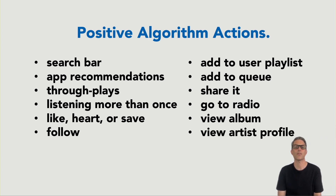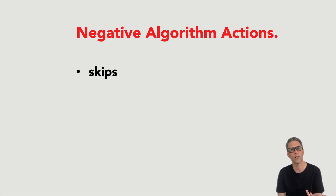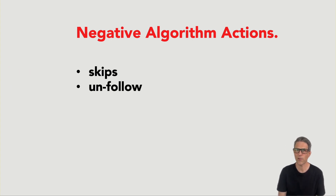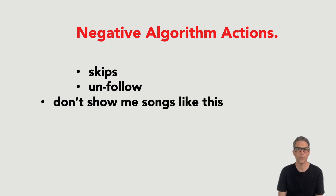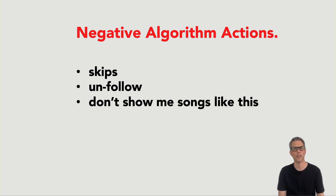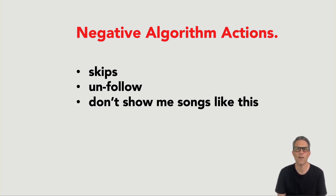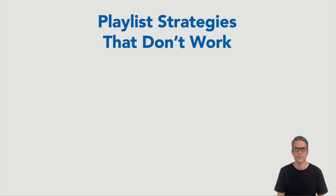Now balance that out with the negative algorithm actions. Skips are pretty much the only one. There are others like unfollowing or 'don't show me songs like this,' but by far skips is the most heavily weighted negative action.